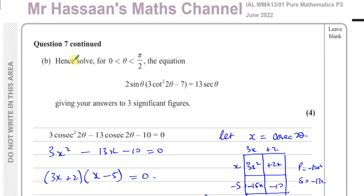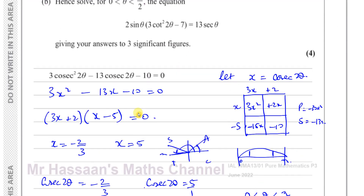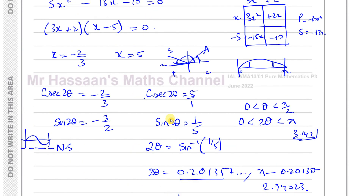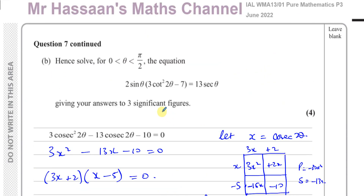That's the answer for question 7 parts A and B. Don't be disheartened if you can't do part A — you can still salvage marks by doing part B. Other questions from this paper are in the playlist, along with trig identity questions from P3. Subscribe by clicking the link. Thank you for watching.